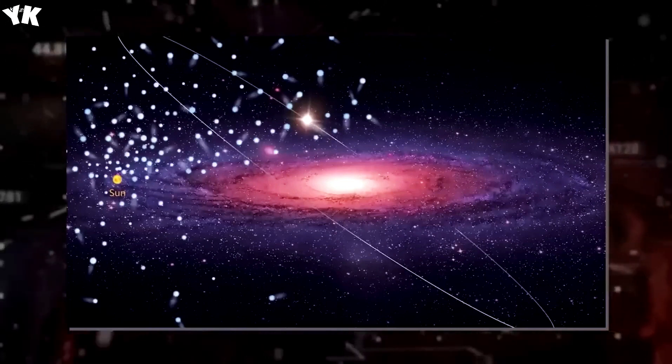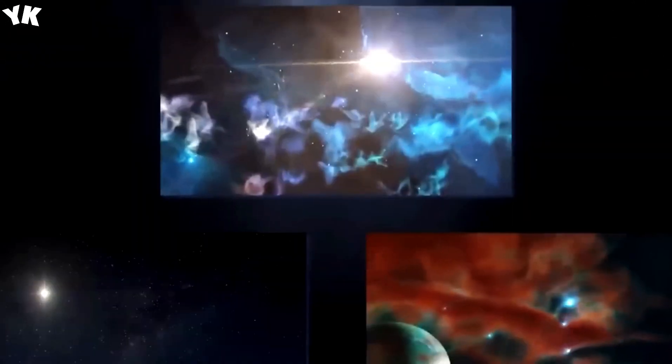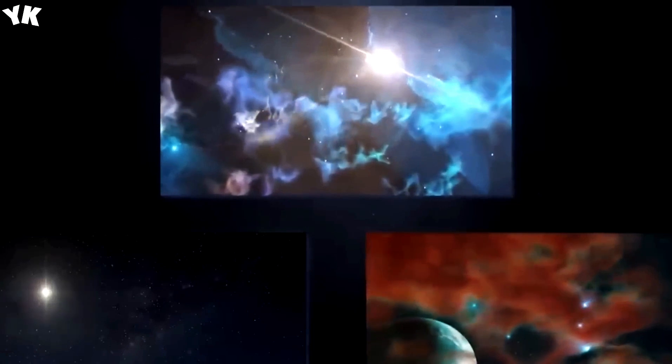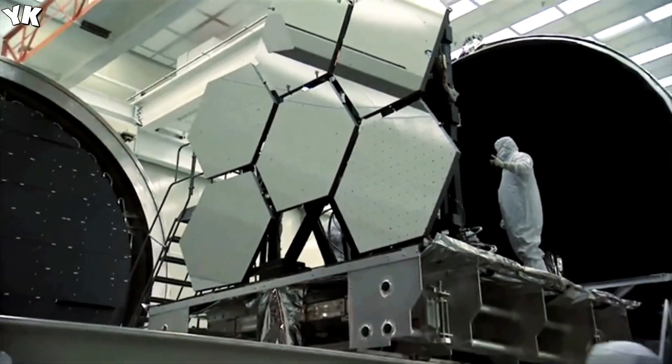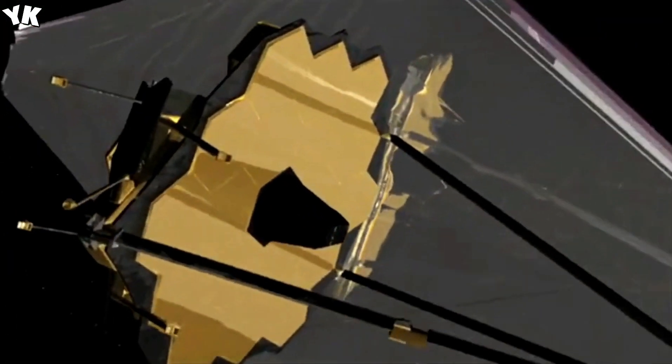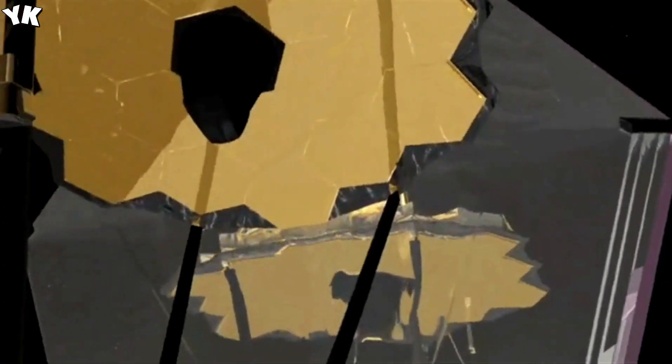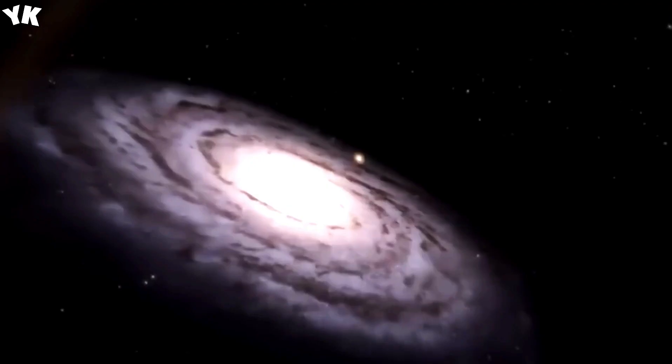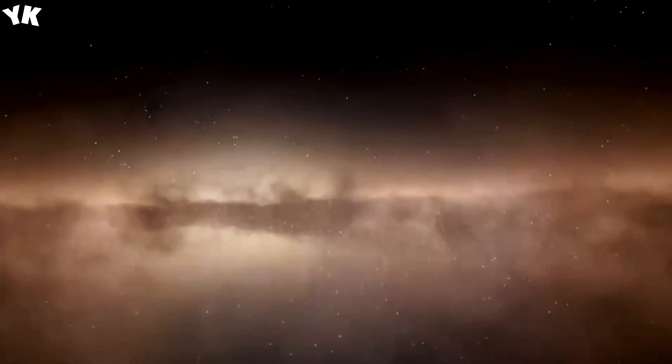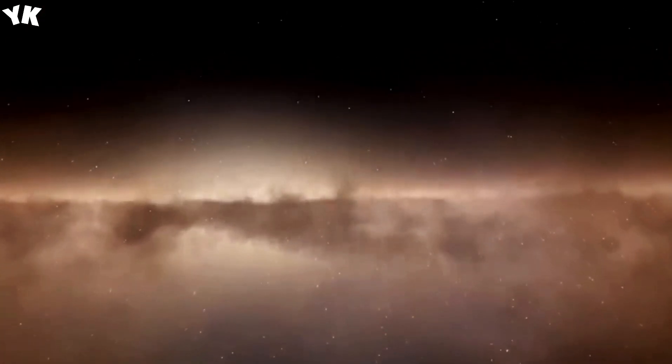For a significant period, scientists believed Andromeda to be much larger than the Milky Way. This assumption stemmed from the apparent size of Andromeda when observed from Earth. However, with the advent of advanced instruments like the James Webb telescope, scientists gained a clearer perspective. They realized that Andromeda isn't significantly larger than the Milky Way. In fact, the Milky Way is much more massive than initially thought.